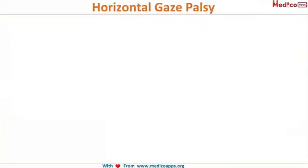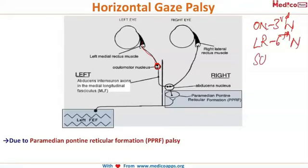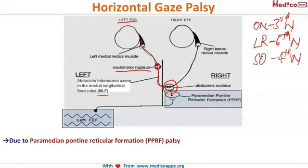Now let's look at horizontal gaze palsy. The oculomotor nucleus on the same side supplies the medial rectus of the same eye. All extraocular muscles are supplied by the oculomotor nerve — the third nerve — except the lateral rectus by the sixth nerve and the superior oblique by the fourth nerve. The oculomotor nerve supplies the medial rectus on the same side. The oculomotor nucleus is connected to the sixth nerve nucleus — the abducens nucleus — of the opposite side via the medial longitudinal fasciculus. So the MLF connects the third nerve nucleus of one side to the sixth nerve nucleus of the opposite side.